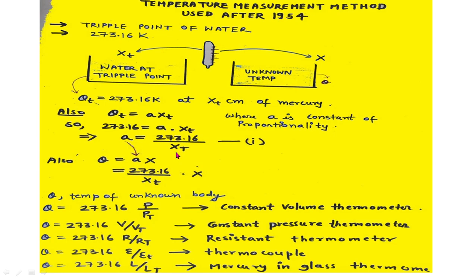Here, theta_t is substituted with 273.16 because it is the temperature of the triple point of water. For this setup, we have obtained the equation and derived the expression for 'a', the constant of proportionality. Using this, we will now find out the temperature of the unknown body.